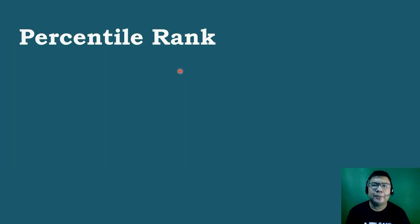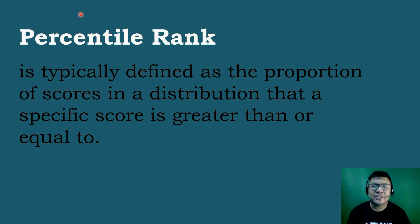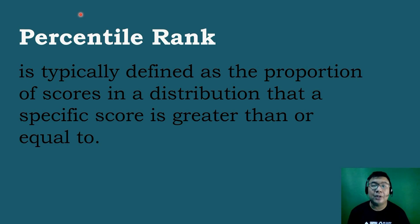When we say percentile rank, it is typically defined as the proportion of scores in a distribution that a specific score is greater than or equal to. For instance, if you receive a score of 95 on a mathematics test, and this score was greater than or equal to the scores of 88% of the students taking the test, then your percentile rank would be equal to 88.